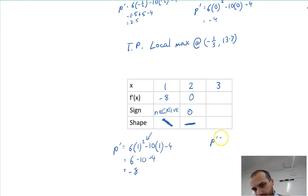p dash equals 6, 3 squared minus 10 times 3 minus 4. 6 times 3 squared, 9 times 6, that's like 54 minus 30 minus 4. That's going to be like 20, which is a positive number, which looks like this.